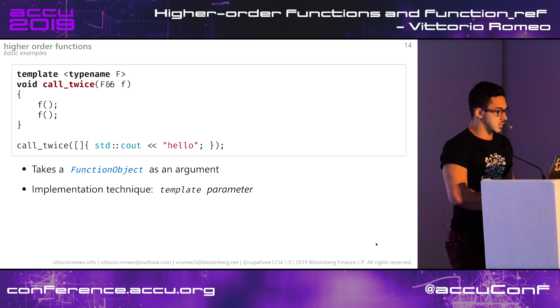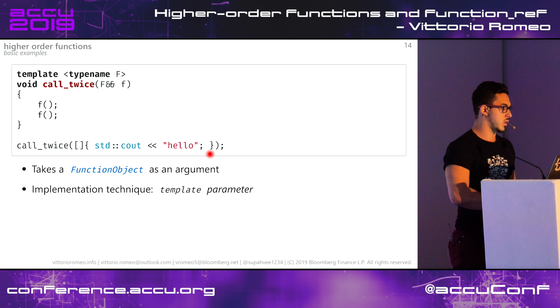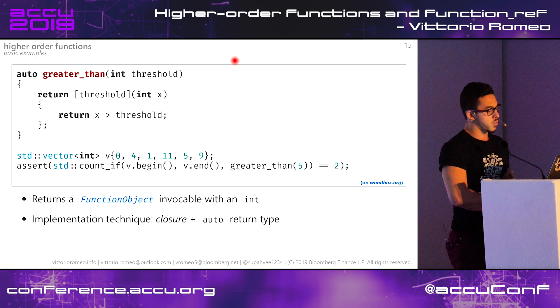A basic example is this function called call_twice. It's implemented with a template - we basically take a generic F callable object and then invoke it twice in the body. If I invoke this function with a lambda, it will print out 'hello' twice. The idea here is that call_twice is a higher-order function because it takes an F as an argument, which is a function itself. The implementation technique we used is a template, but we have other ways we can implement them in the language.